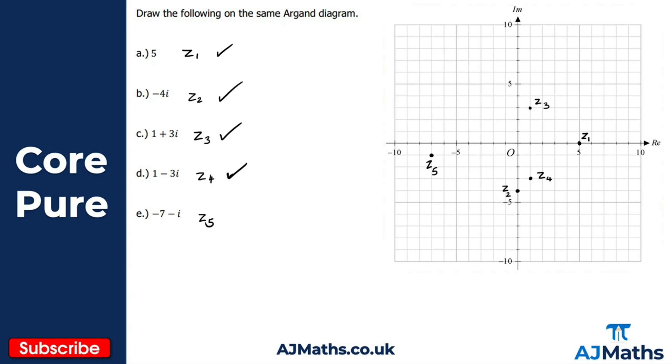For this example I have represented them all as points rather than vectors, otherwise it would get maybe a little bit messy, but we could have also represented them as vectors as well. That's our solution to that question, and that brings us to the end of this video on an introduction to the Argand diagram. In the next video we're going to take a look at the modulus and argument form of a complex number.